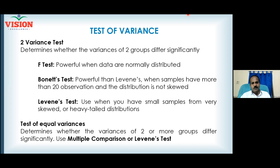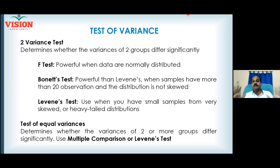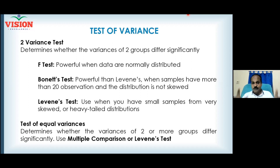The requirement is that variances should be equal when you are doing a two-sample t-test. If variances are unequal, we tweak the formula and there is still a procedure to conduct the test, but the requirement is equal variances. When you are doing ANOVA, variances should also be equal.